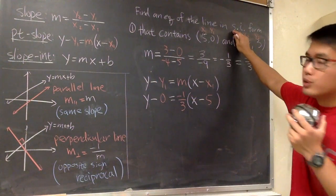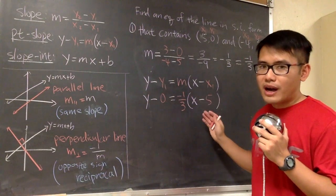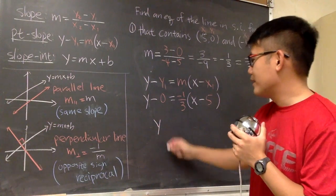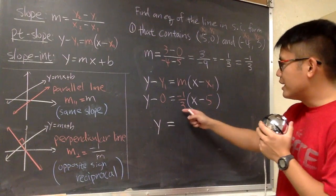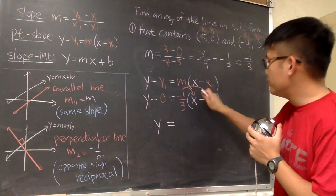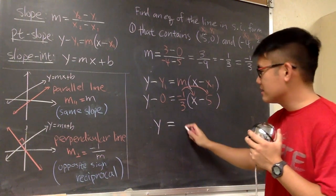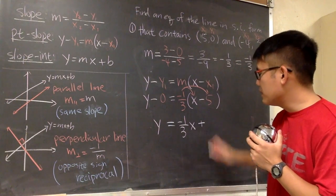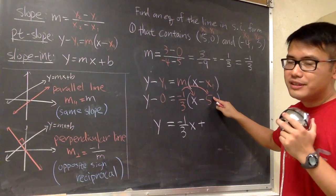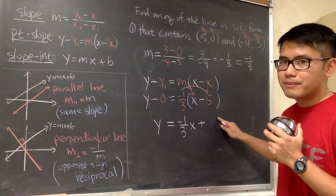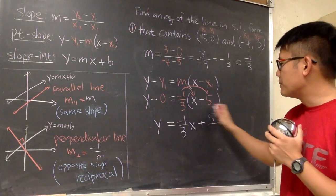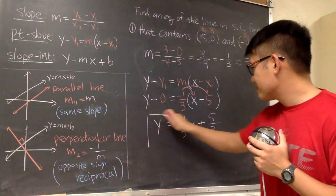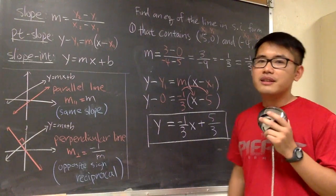However, since this question is asking us to have the answer in slope-intercept form, we do have to isolate the y and we should not have the parentheses. This is just y minus 0, which is just y — the minus 0 doesn't matter. We have to take care of the parentheses by distributing. Negative 1 over 3 times x is just negative 1 over 3 x. Next, we have negative times negative, so that gives us plus. 1 over 3 times 5 is 5 over 3, and that was positive at the end. This right here is the equation that will satisfy this condition.